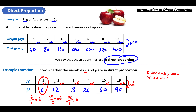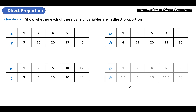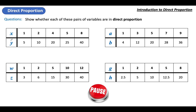You divide each y value by its x value — they're linked in pairs, take the second value and divide it by the first, and check that it's the same multiplier every time. If you weren't sure, re-listen to that. Otherwise, move on to these questions. There are four sets of variables — x and y values, a and b values — just see if each set is in direct proportion. Pause the video, copy them out, try the dividing, and see if they're in direct proportion.